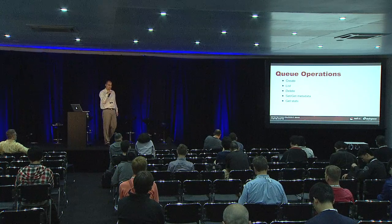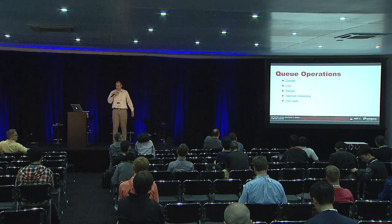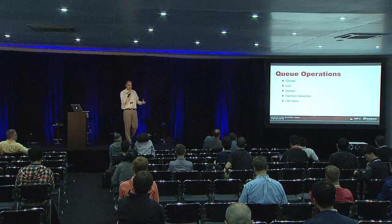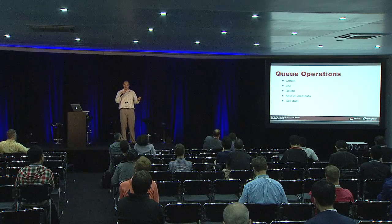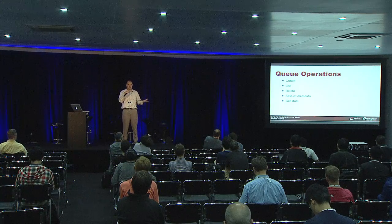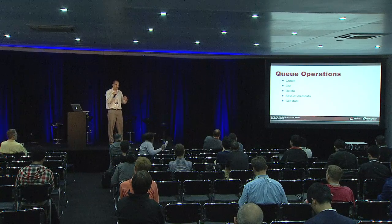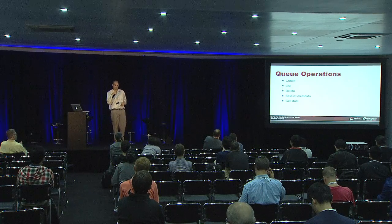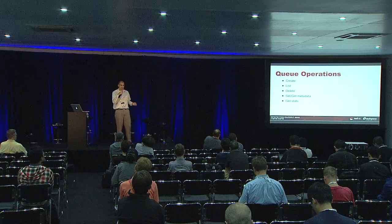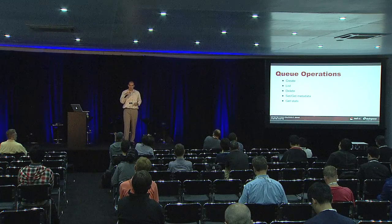First up, we have queues. You can create a queue, list queues — which can be useful for auto-discovery — and certainly delete them. One interesting thing you can do with a queue is set metadata on it. Back to the invoicing example, you could set a template into that queue metadata and then your worker could pull that out and use it to construct the PDF file that you would then send to your customer. You can also get statistics for that queue: how many messages there are total, how many are claimed versus free, and find the oldest and newest message. This is really useful for auto-scaling and getting better insight into how your queues are behaving.